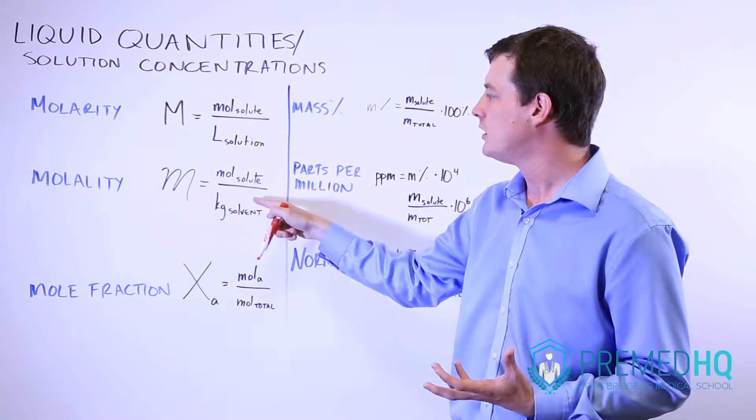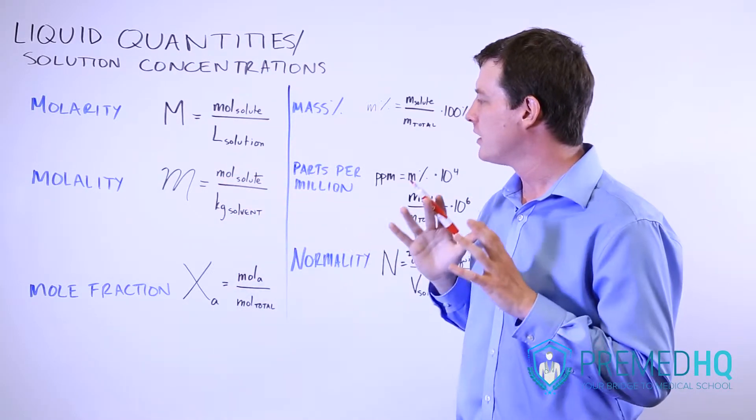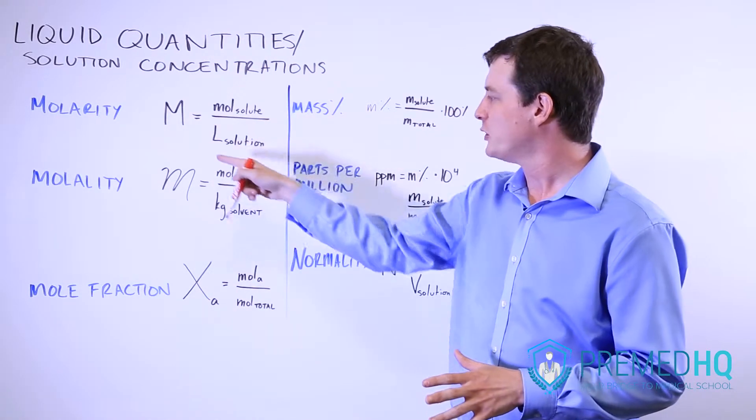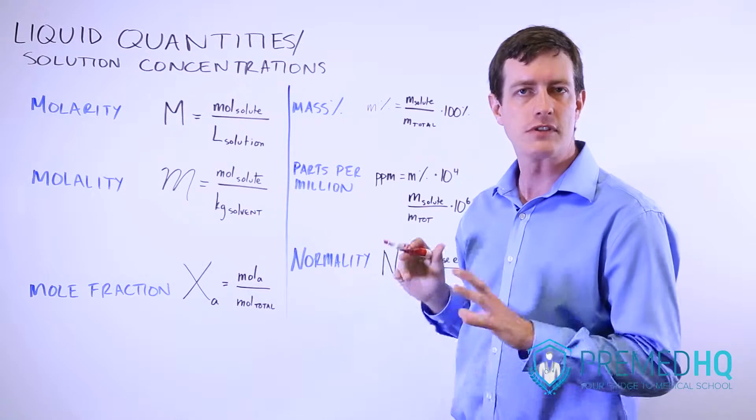Molality, which tends to be depicted as a more cursive looking M, is the moles of your solute over the number of kilograms of solvent. Remember that this one is the liters of solution whereas this one is the kilograms of solvent.